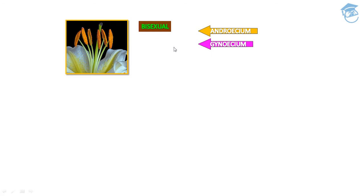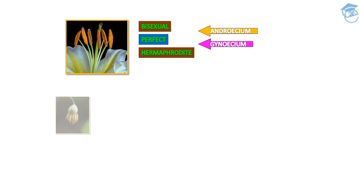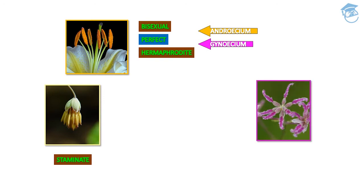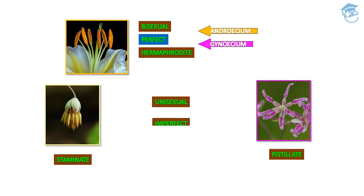If androecium and gynoecium — both male and female reproductive parts — are present in one flower, that flower is called bisexual, also called a perfect flower or hermaphrodite flower. A staminate flower has only the male part (androecium), while a pistillate flower contains only gynoecium and no stamen. Staminate and pistillate flowers are unisexual, unlike bisexual flowers. These two unisexual flowers are called imperfect flowers.